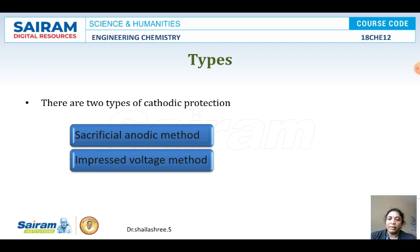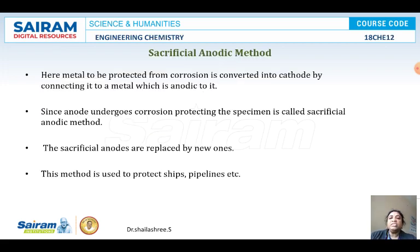In the sacrificial anode method, the metal to be protected is converted to the cathode by connecting the base metal, iron, with any other metal present above it in the electrochemical series or in the galvanic series. Metals present above iron in the electrochemical series include magnesium, zinc, lithium, sodium, and potassium, among many others.